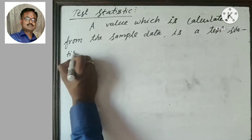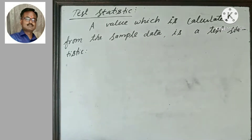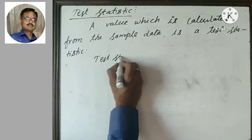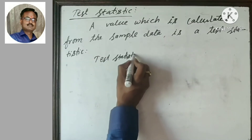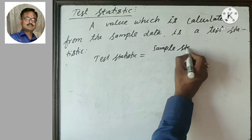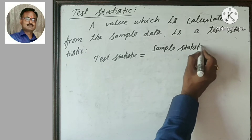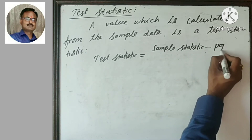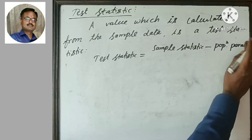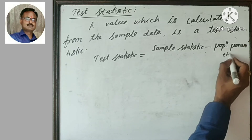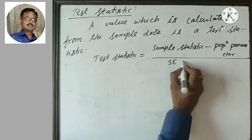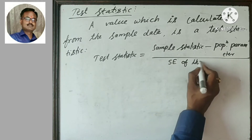A test statistic can be calculated by the formula: test statistic equals sample statistic minus the corresponding population parameter, upon the standard error of the sample statistic.